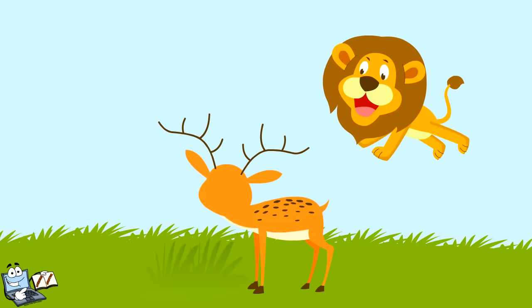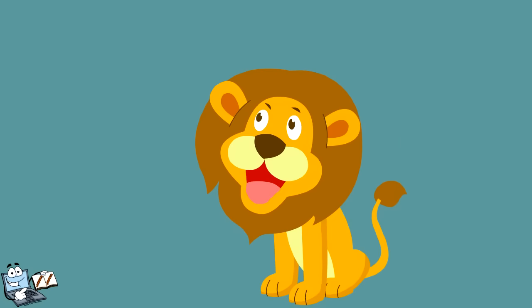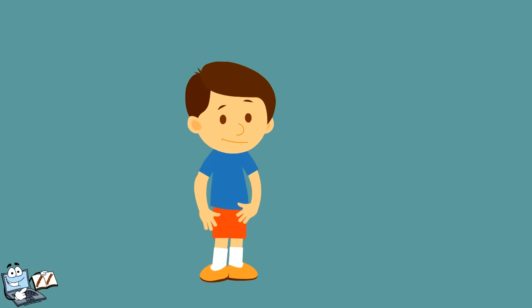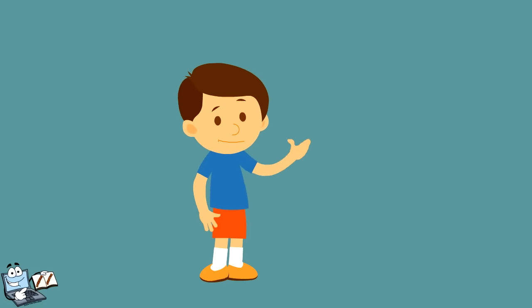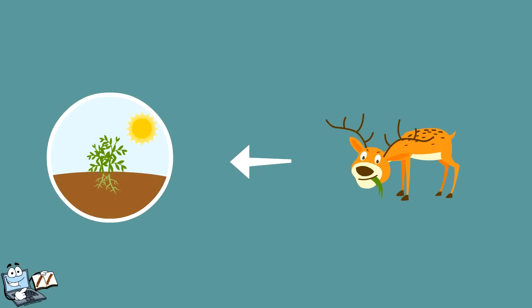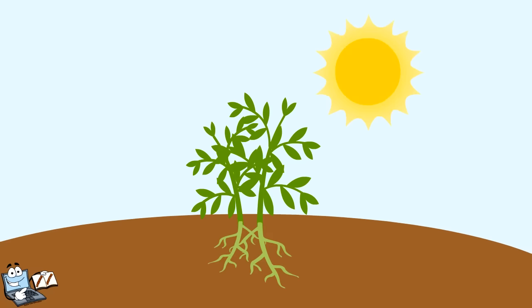A lion is coming in and it's in an attacking mood. Lions and other species that eat other animals are called carnivores. Just now you have seen a small food chain. Plants make their own food, other animals eat plants, and they are eaten by other animals — directly or indirectly, we all depend on plants for food.